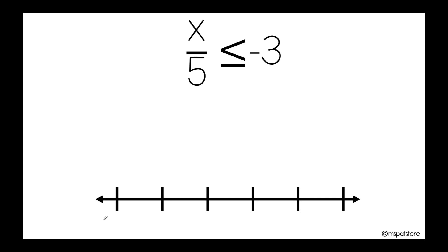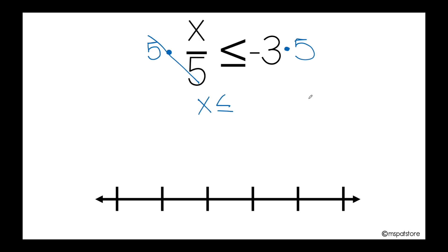In this case, 5 shouldn't be there. 5 is dividing, so the inverse operation of division is multiplication. So I'm going to multiply by positive 5, because this is positive 5, and multiply by positive 5 on the other side as well. Now I'm ready to cancel these out. So it will be x. I bring down the inequality symbol, and as I am multiplying and they have different signs, my answer will be negative. So negative 3 times 5 is negative 15.